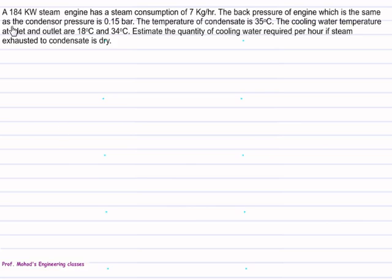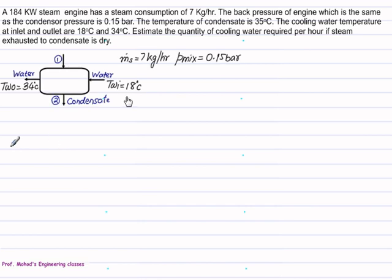In example number 2, a 184 kW steam engine has a steam consumption of 7 kg per hour. Back pressure of engine, which is same as the condenser pressure, is 0.15 bar. The temperature of condensate is 35 degrees Celsius. In this problem we have given the mass of steam supplied is 7 kg per hour.